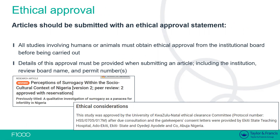On ethical approval: articles should be submitted with an ethical approval statement if your research involves humans or animals. You must obtain ethical approval from an institutional review board before actually carrying out the research. When I say human subjects, this covers anything from drug experimentation and clinical trials to softer research involving humans like interviews or online surveys — any time there's a human participant, there needs to be ethical approval. When you submit your article, the ethical approval details must include the name of the institution, the review board name that approved it, and any permit numbers. I've pulled an example from an existing article showing an ethical statement that includes the university name, ethical clearance committee, and protocol numbers.